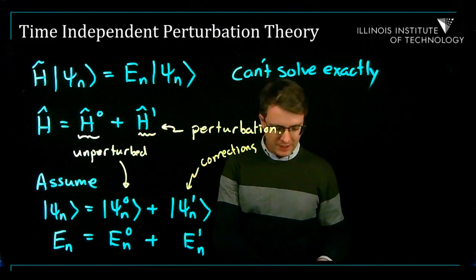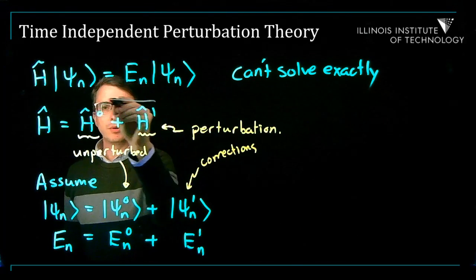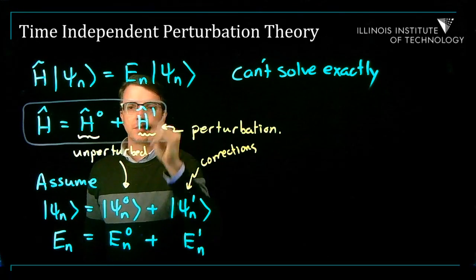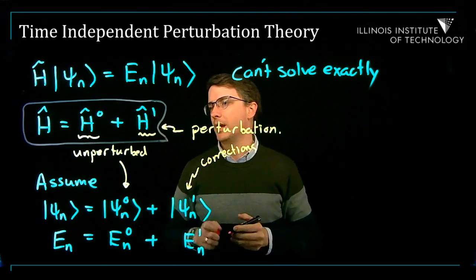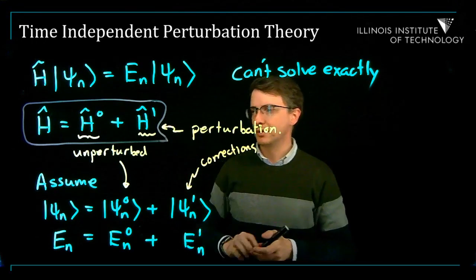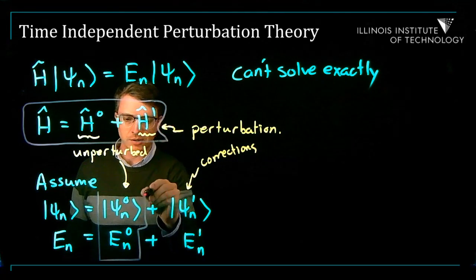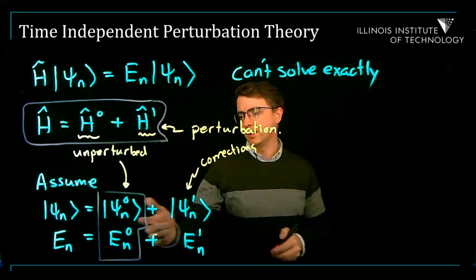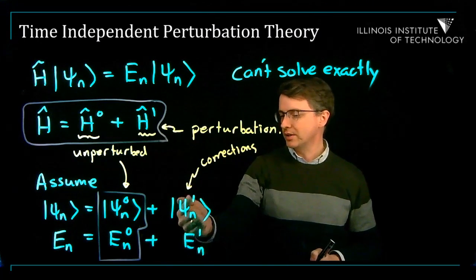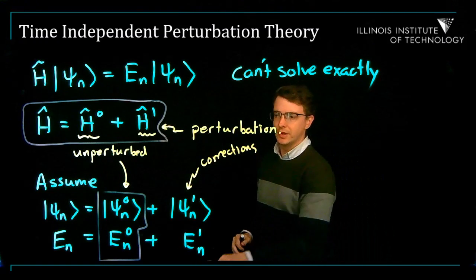It's worthwhile taking a moment to think about what you know. We know the full Hamiltonian, and we can break it into two pieces: an unperturbed and a perturbed piece. We also know the unperturbed solutions — we can solve the Schrodinger equation exactly. What we are trying to find is the correction to the wave function and the correction to the energy levels.